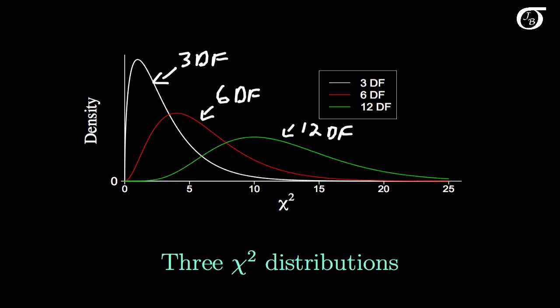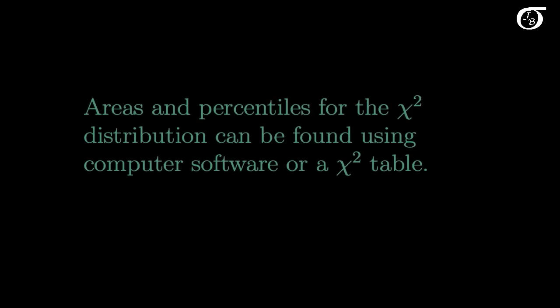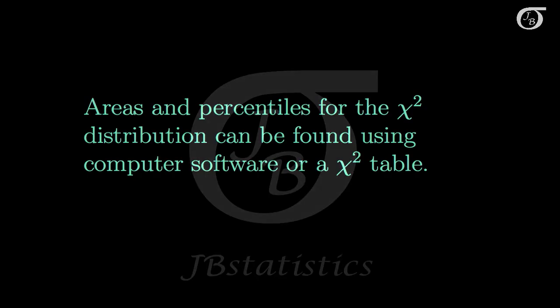Now if we're doing any probability calculations or statistical inference procedures, we're going to have to find areas under the curve and percentiles for the chi-square distribution. To find those areas and percentiles, we're going to have to use computer software or a chi-square table, and I've got different videos showing you how to do that.